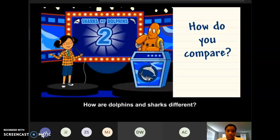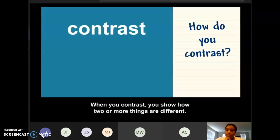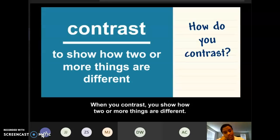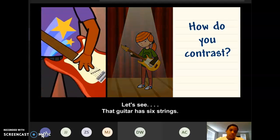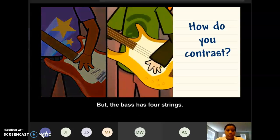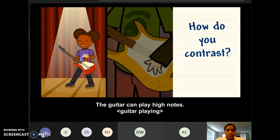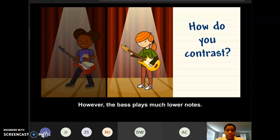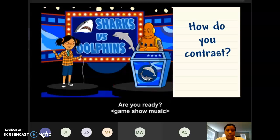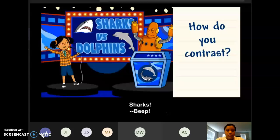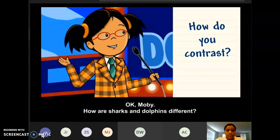How are dolphins and sharks different? How do you contrast? When you contrast, you show how two or more things are different. You describe how things are not alike. Let's see. That guitar has six strings, but the bass has four strings. The guitar can play high notes. However, the bass plays much lower notes. Are you ready? Let's play Sharks vs. Dolphins. Okay, Moby. How are sharks and dolphins different?